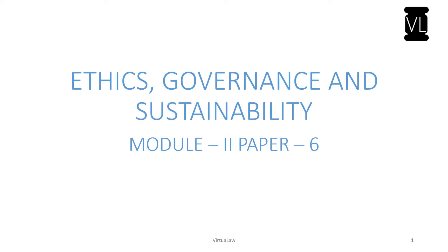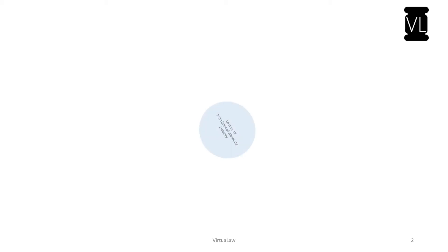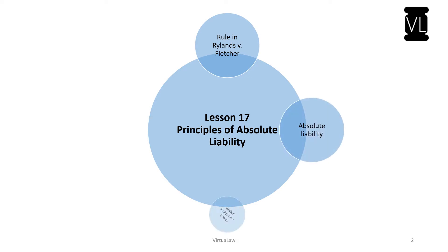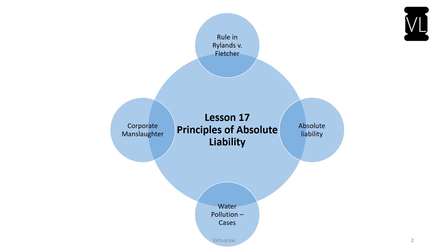This is lesson number 17 of Ethics Governance and Sustainability, the very last lesson. Its scope includes the rule in Rylands versus Fletcher, the concept of absolute liability, water pollution cases, and corporate manslaughter. The rule in Rylands versus Fletcher, absolute liability, and water pollution cases have already been discussed in the executive course, so only the basics will be covered here, along with a brief case study of the Bhopal gas tragedy.